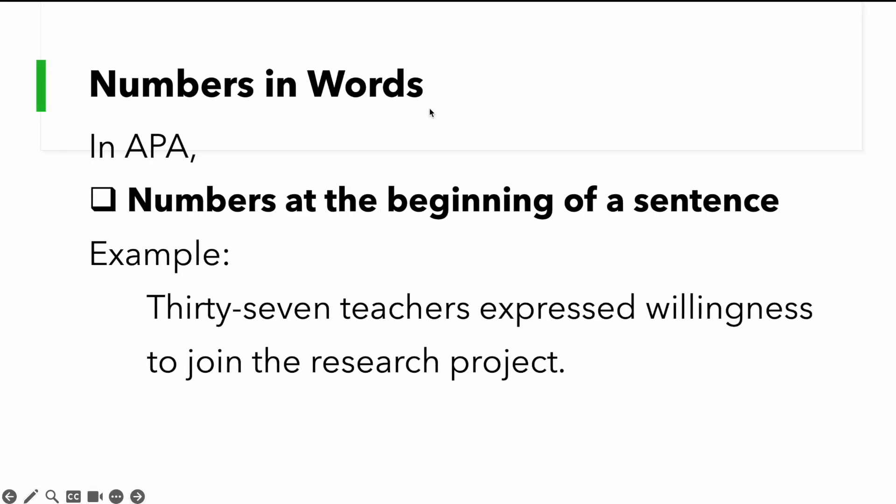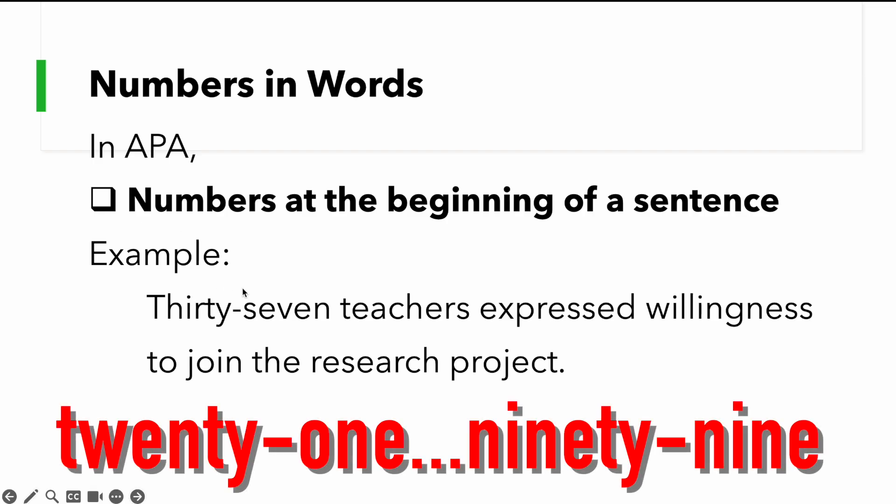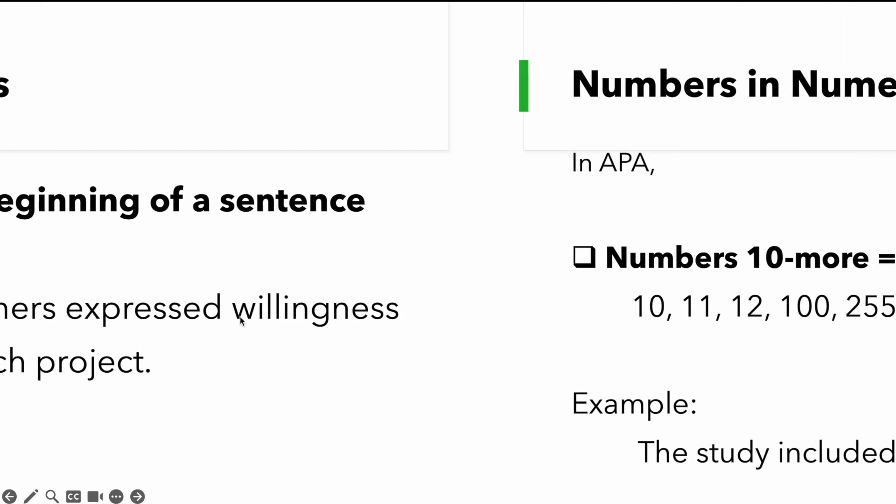Next one, numbers in words also. In APA, numbers at the beginning of a sentence. If we have numbers in the beginning of a sentence, then we write such in words. So, 37 teachers expressed willingness to join the research project. We don't write 37 in numerals, rather in words because based on the rule, it should be written in words if it is at the beginning of a sentence. And also we have to pay attention to numbers which are hyphenated beginning with 21 up to 99. So, we have this hyphen here.